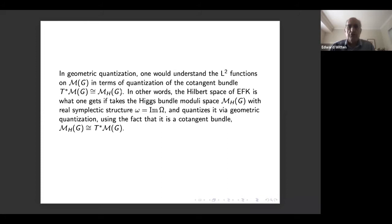They constructed operators on this Hilbert space that are related to the usual constructions of geometric Langlands, and found interesting duality theorems and conjectures about these operators. In geometric quantization, one understands L2 functions on some space in terms of quantizing the cotangent bundle of that space. Here, the cotangent bundle of the moduli space of bundles is a dense open set in the Higgs bundle moduli space, and in an L2 theory, removing a set of measure zero isn't important.